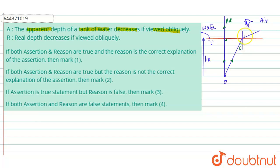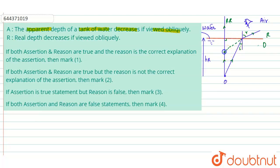Since water is a denser medium and air is a rarer medium, light traveling from denser to rarer medium deviates away from the normal — this is the angle of refraction. To draw the image of the object, we retrace these two refracted rays back into the water.